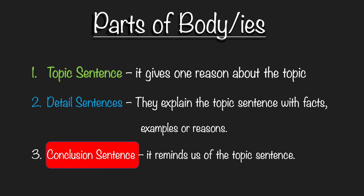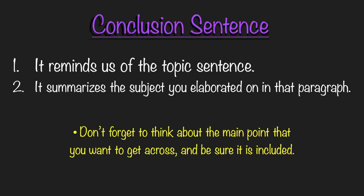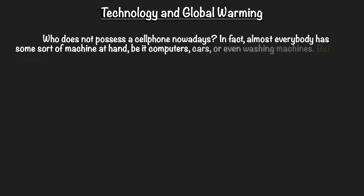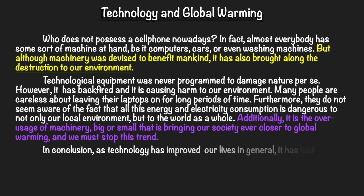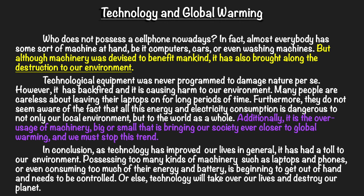Now let's take a look at the last part, and that is your conclusion sentence. It reminds us of the topic sentence. It summarizes the subject you elaborated on in that paragraph. Don't forget to think about the main point that you want to get across and be sure it is included. In our example, you will see the conclusion sentence in lilac: 'Additionally, it is the overusage of machinery, big or small, that is bringing our society ever closer to global warming. And we must stop this trend.'